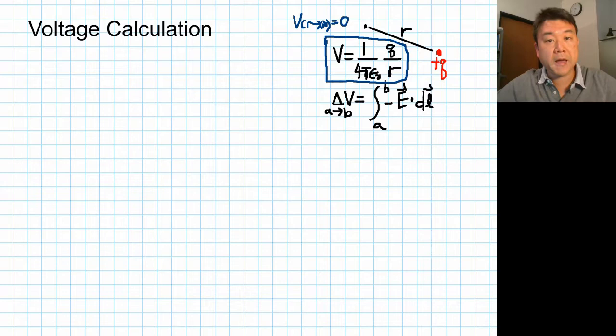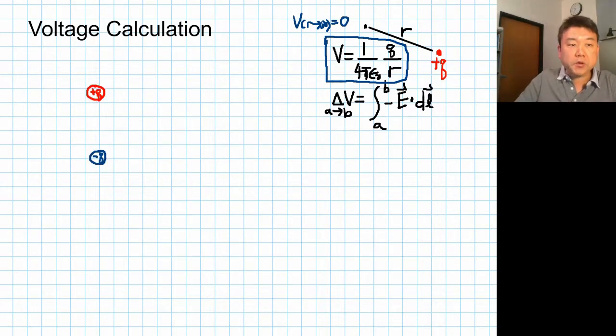The simplest one is dipole charge distribution. So here's the dipole charge distribution. Charge of plus Q and minus Q separated by some distance D.